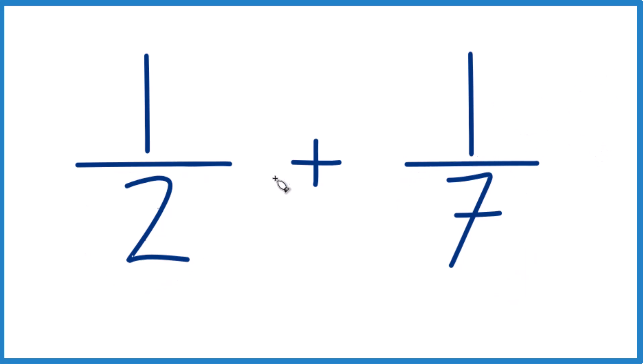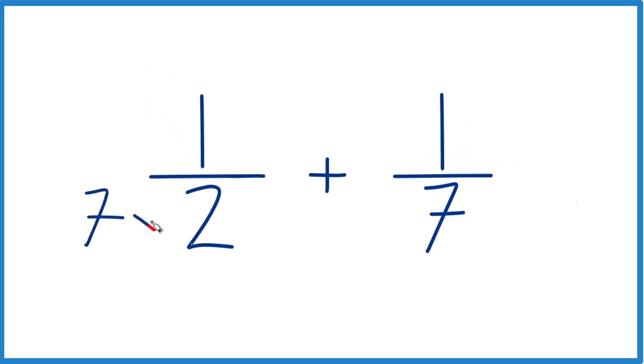Why don't we do this? 2 and 7. So we could say 2 times 7 here and then 7 times 2 here because this would give us 14 and this would give us 14 and we'd have the same denominator.